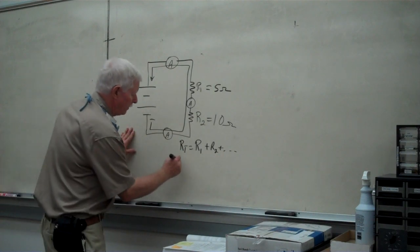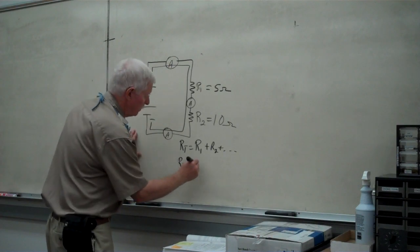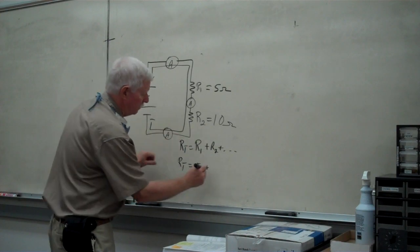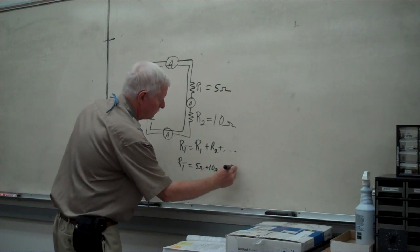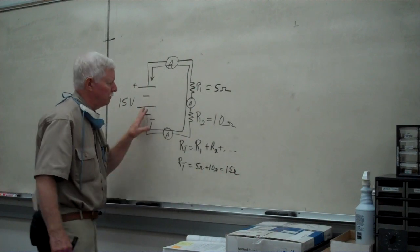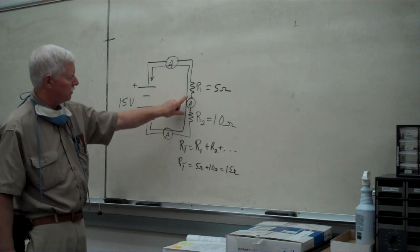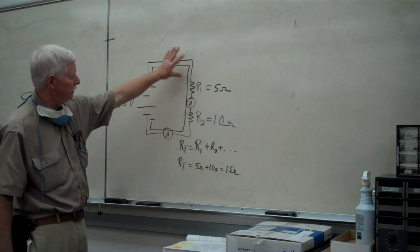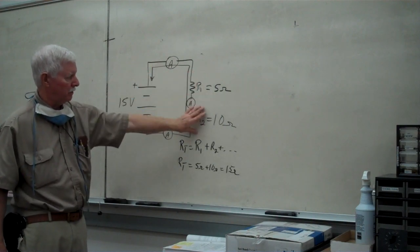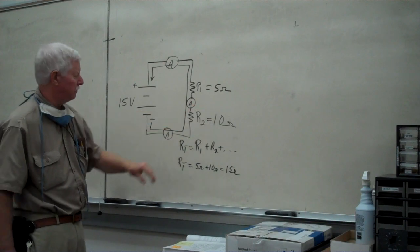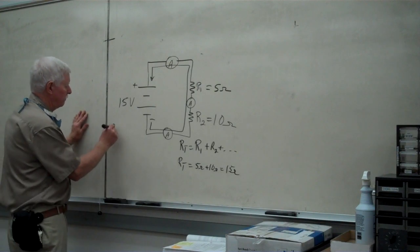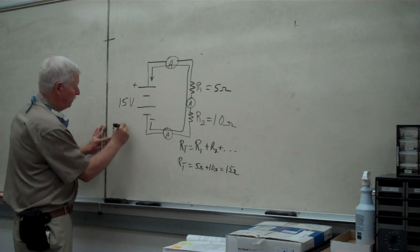So RT in this particular case then becomes R1 plus R2, which is 5 ohms plus 10 ohms, and we have a total value of 15 ohms in this particular circuit. Remembering that when we're talking about total circuit resistance, we're including all of the drops of current and voltage that could be throughout the circuit. So in this particular case then, we now have the total amount of resistance, 15 ohms.